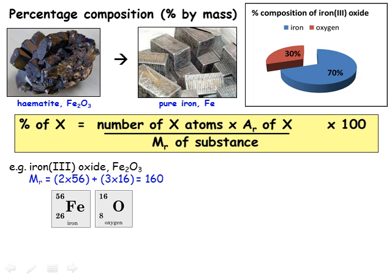For example, iron is obtained from the ore haematite, which is iron(III) oxide with formula Fe2O3. We look up the relative atomic masses of iron and oxygen and work out that the relative formula mass of Fe2O3 is 160. We have two Fe atoms in the formula, so the mass of the iron is 2×56. Dividing by 160 gives 0.70, and multiplying by 100 gives 70% iron.